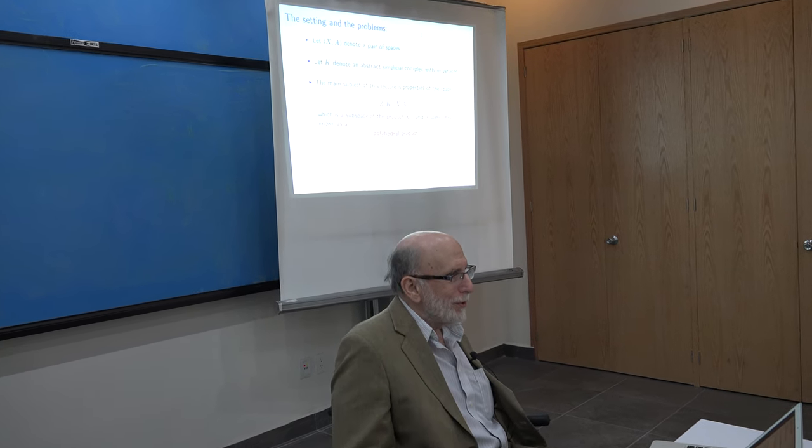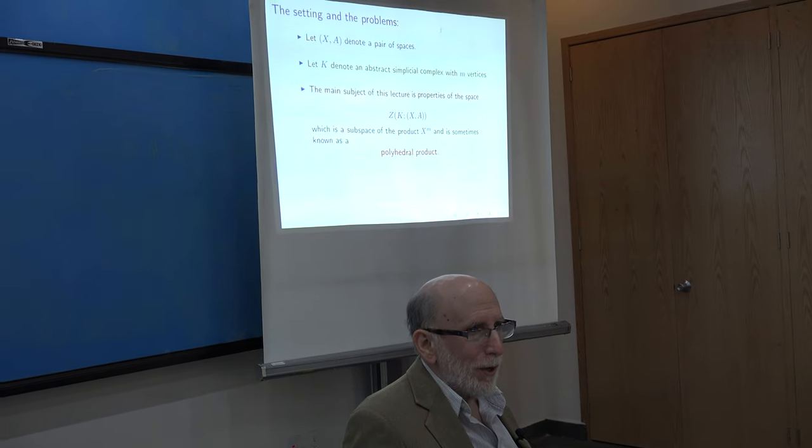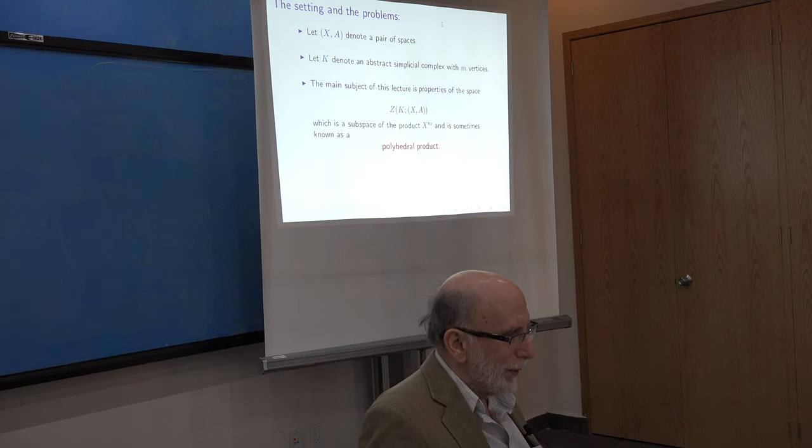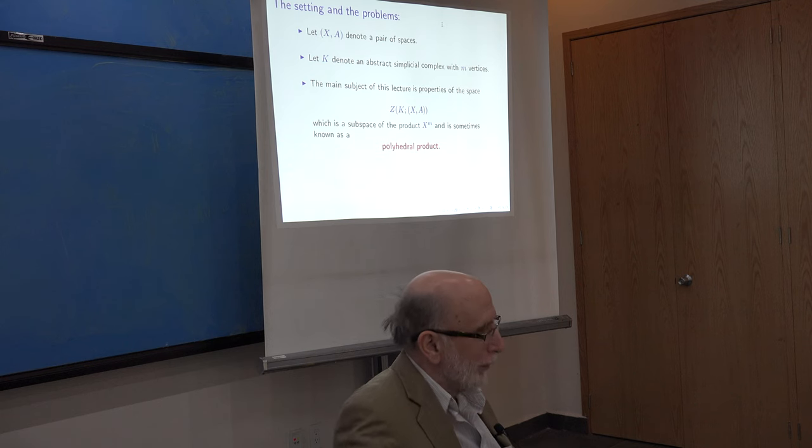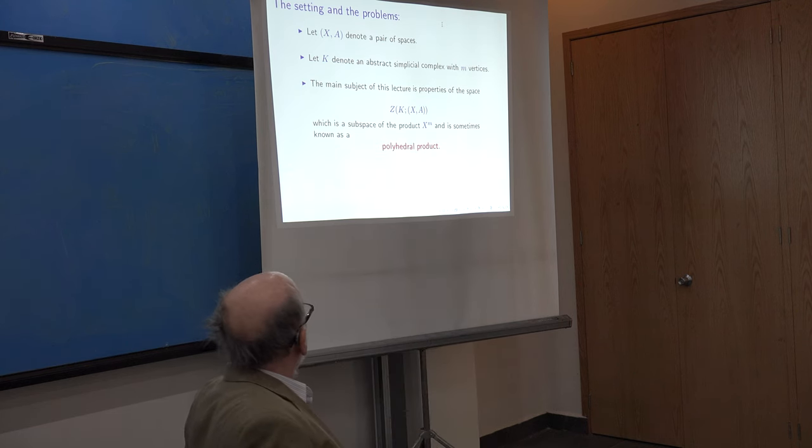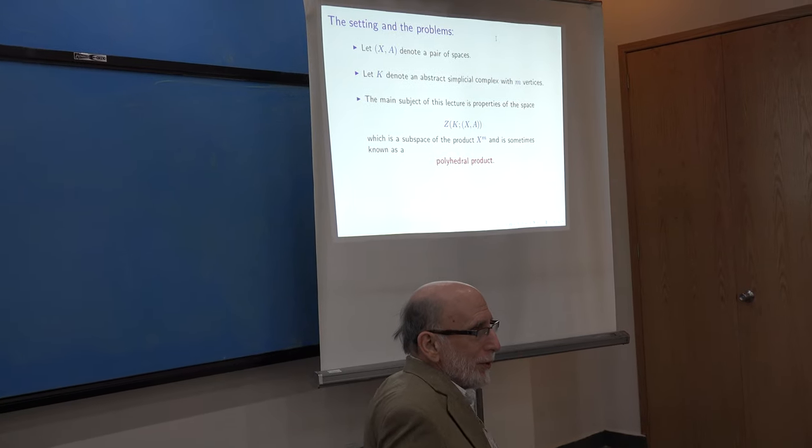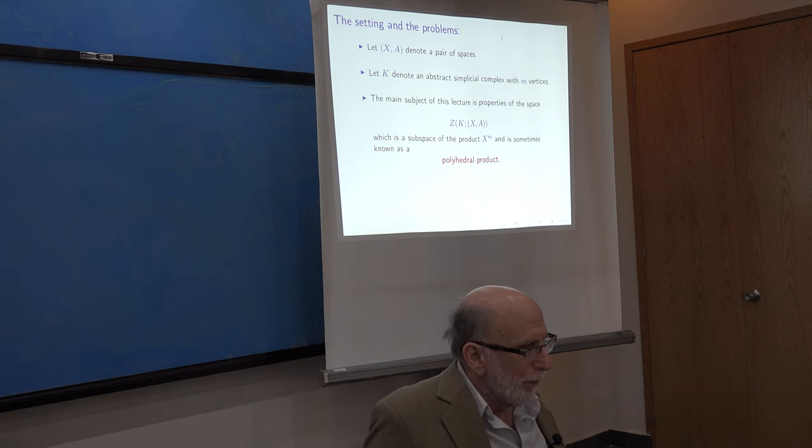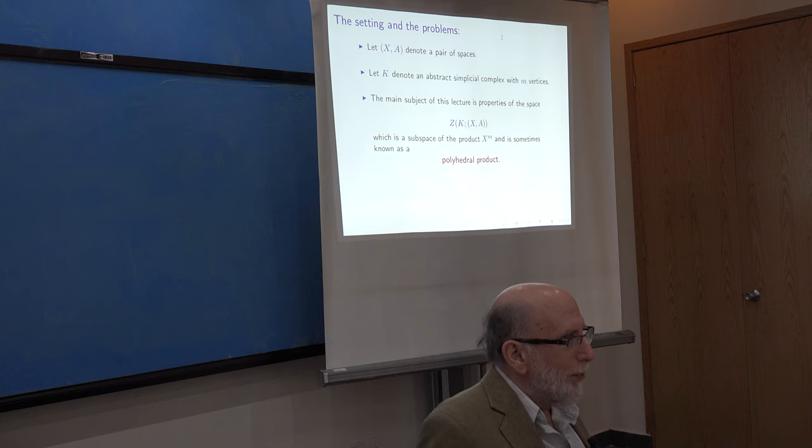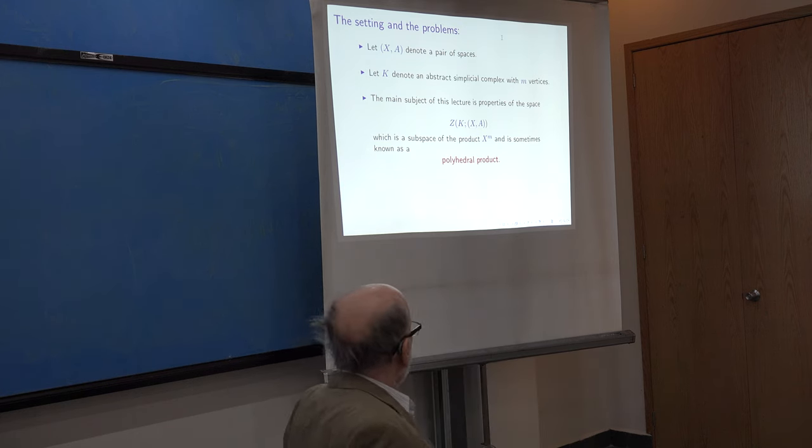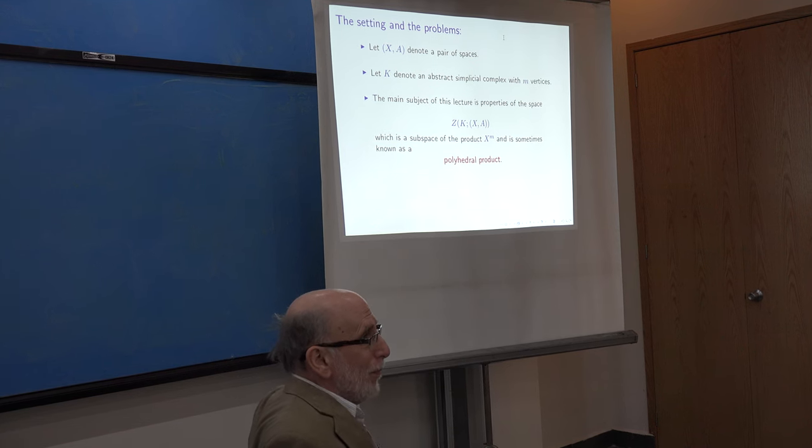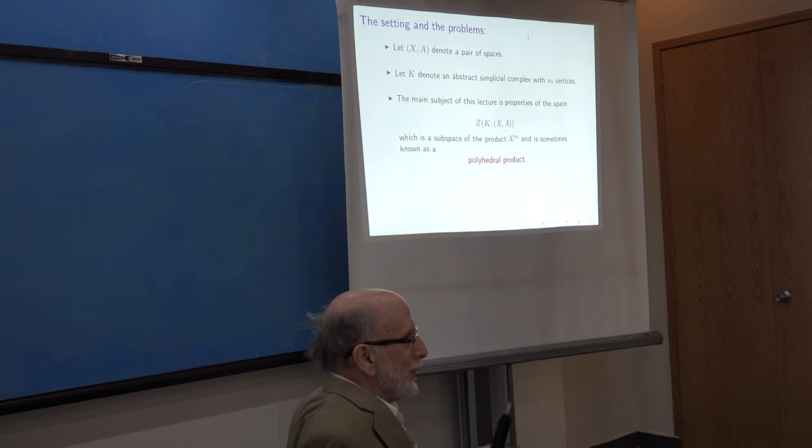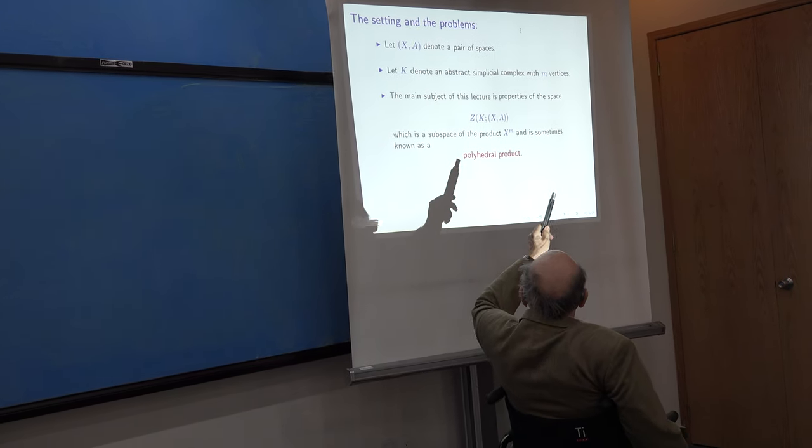So the ingredients for polyhedral products are just a pair of spaces, X, A, where A is a subspace of X. And then the second ingredient is that K is an abstract simplicial complex. The main subject of this lecture is properties of a space called ZK.